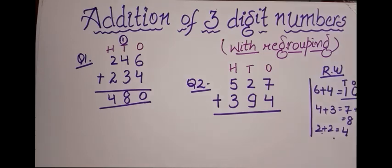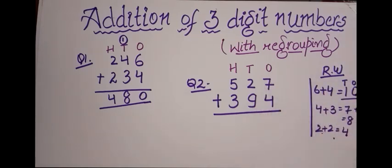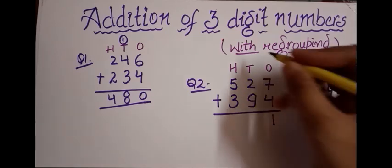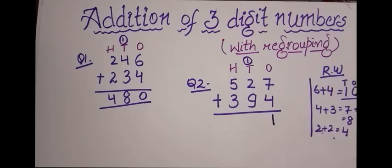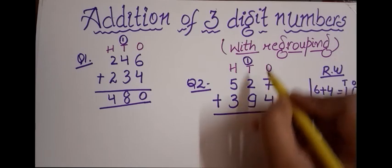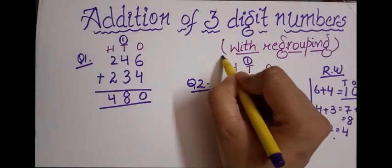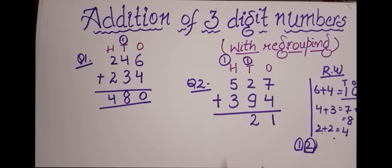Let's start adding from the ones column. Seven plus four equals eleven — I'll skip the rough work this time. I write one down in the ones column and write one as carry, circling it. Moving to the tens column: two plus nine equals eleven, plus the carry of one makes twelve. I write two in the tens place and carry one to the hundreds column.